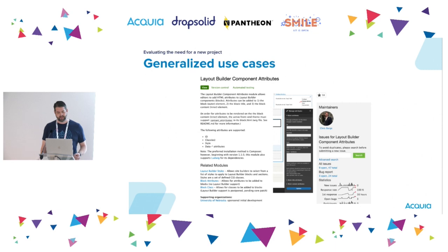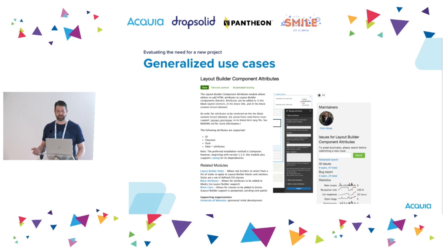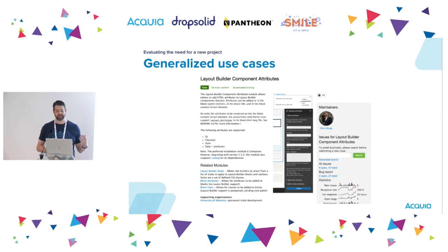When we talk about generalized use cases, here's an example I like to use: the Layout Builder Component Attributes module. It allows content creators to add HTML attributes to blocks in Layout Builder. I built this when I was at the University of Nebraska-Lincoln. We needed to allow power users to add classes from our design system. But instead of asking "how can we allow editors to add our design system classes," we changed the framing: "How can we empower Layout Builder users to add CSS classes to blocks placed in layouts?" We then expanded scope to include ID, style, and data attributes. At the end, we had a generalized use case to build from.